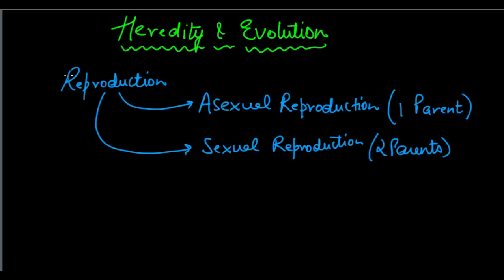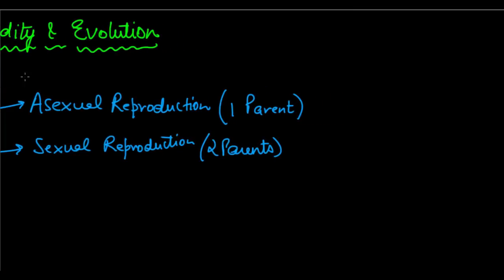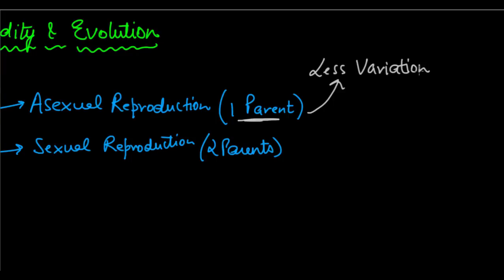There's one more very important difference we looked at while studying this, which I want to highlight. Asexual reproduction involves one parent, and because of this only one parent being involved, asexual reproduction leads to less variation. We saw that variation is just a change — a difference between the DNA and the characteristics of the parent and the offspring. This happens because of errors in DNA copying, which is an essential part of the reproductive process. If there is an error in DNA copying, there may be some change in the features of the offspring, which we call variation.